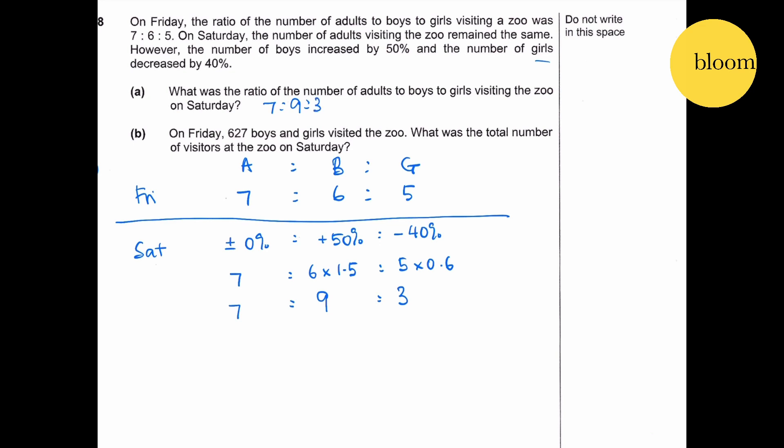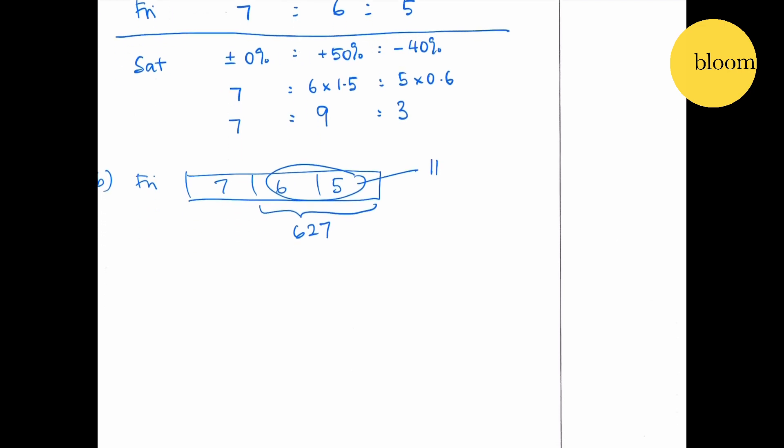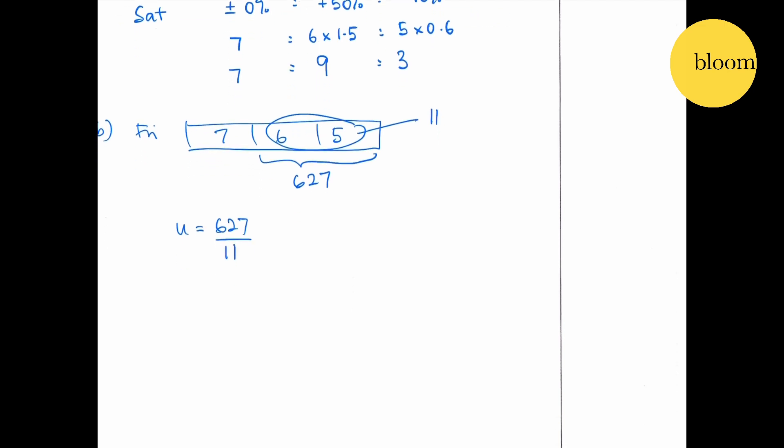Part B: On Friday, 627 boys and girls visited the zoo. What was the total number of visitors at the zoo on Saturday? So we have Friday: 7, 6, 5, and this is 627. Therefore, we know that 11 units is 627. 1 unit is 627 over 11.